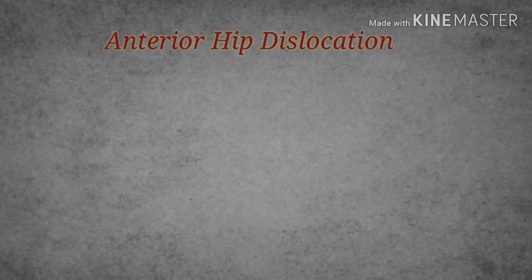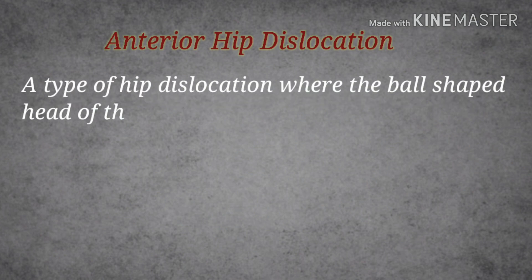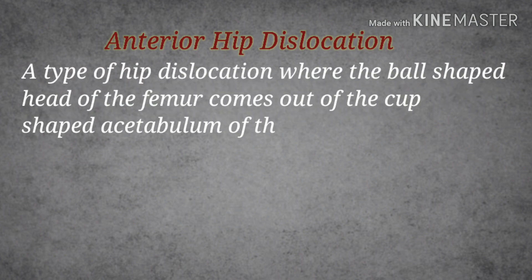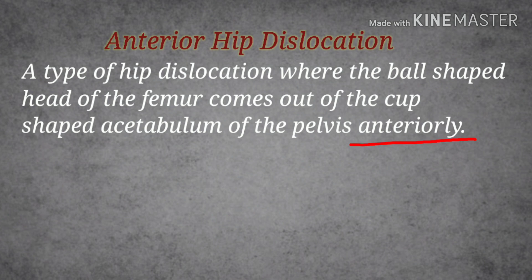Anterior hip dislocation is a type where the head of the femur comes out from the acetabulum of the pelvis anteriorly. The most common subtype of anterior hip dislocation is anterior inferior, due to the mechanism of force and gravity, which causes the femoral head to move inferiorly.